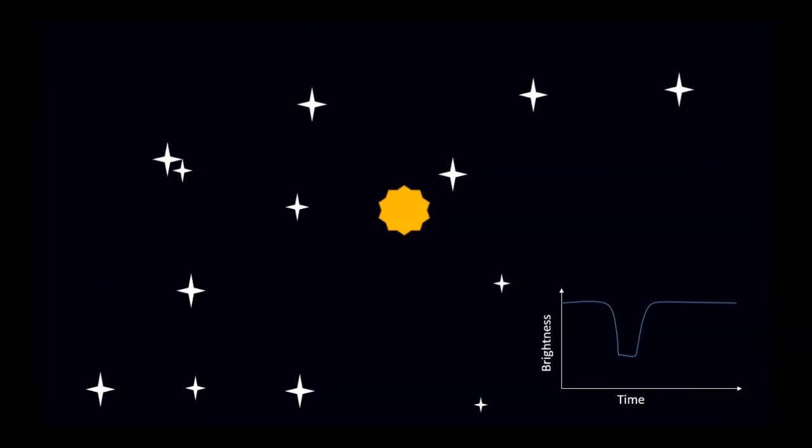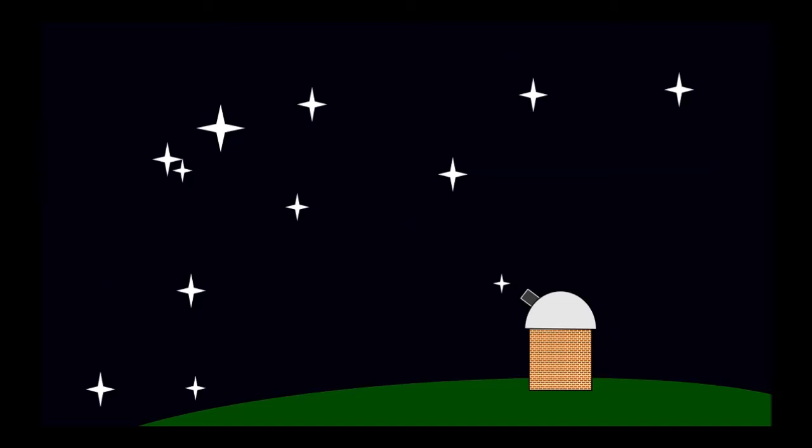That's where it ends. Astronomers look for these dips and use them to find exoplanets. It's really that simple—watching the stars and spotting the ones that go dim and then brighten back up again.